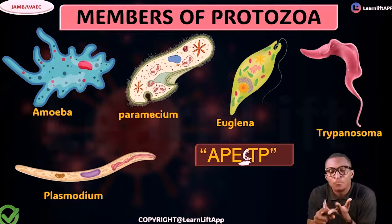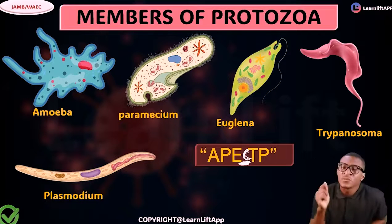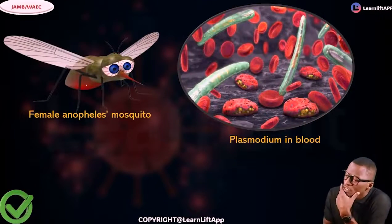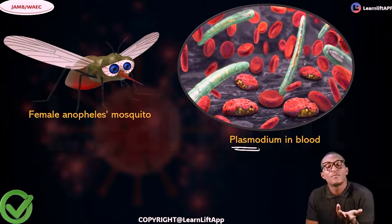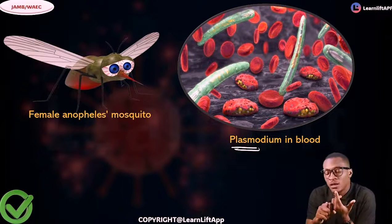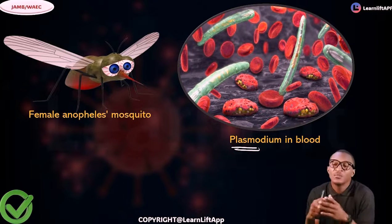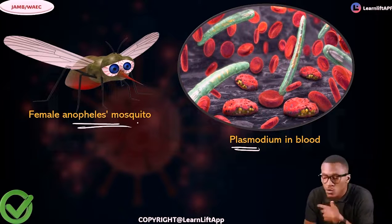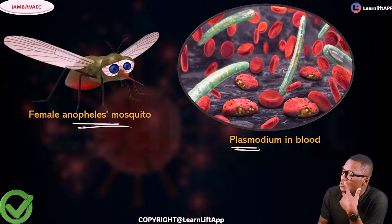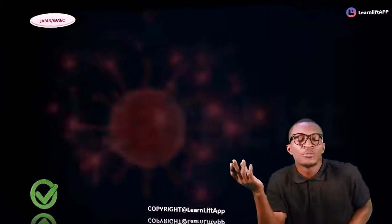So the representative members are: Amoeba, Paramecium, Euglena, Trypanosoma, and Plasmodium. Now, this is a female Anopheles mosquito — it is the vector that carries Plasmodium. Plasmodium is found in blood, and its presence causes malaria. We have Plasmodium malariae, Plasmodium vivax, Plasmodium ovale, and Plasmodium falciparum. The Anopheles mosquito is the vector and man is the host.